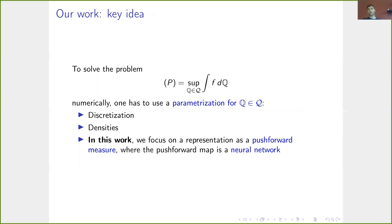In any case, however you want to solve such a problem numerically, you need some way to represent probability measures with finitely many parameters. What one can do, of course, is use discretization. We go over to a finite state space. We can parameterize densities.